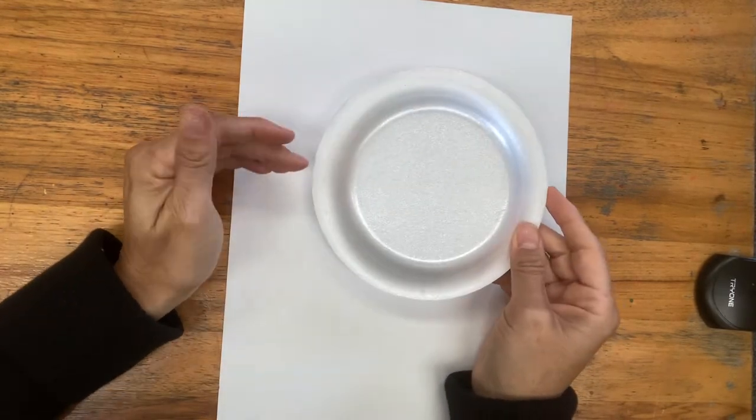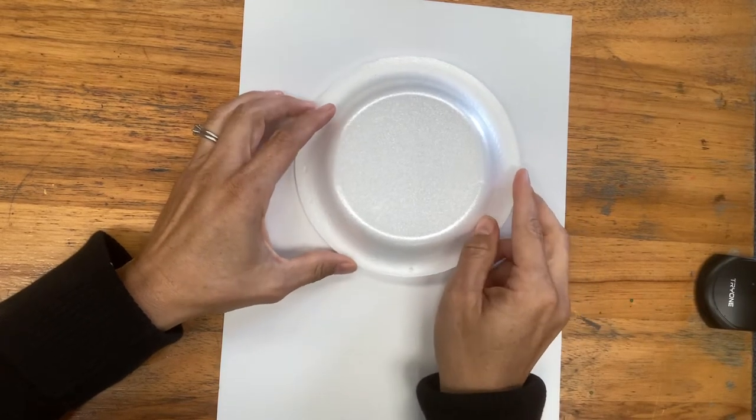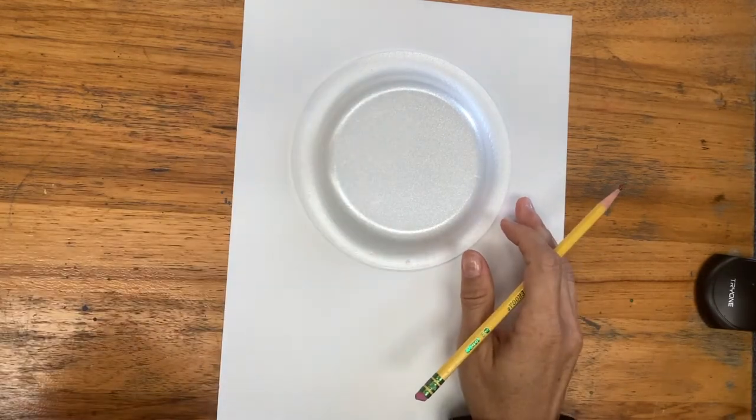If you have a circular shape to trace, you can. There's also the draw along included in this lesson plan that can help you with the drawing of your gumball machine. I'm going to use this plate to get started.